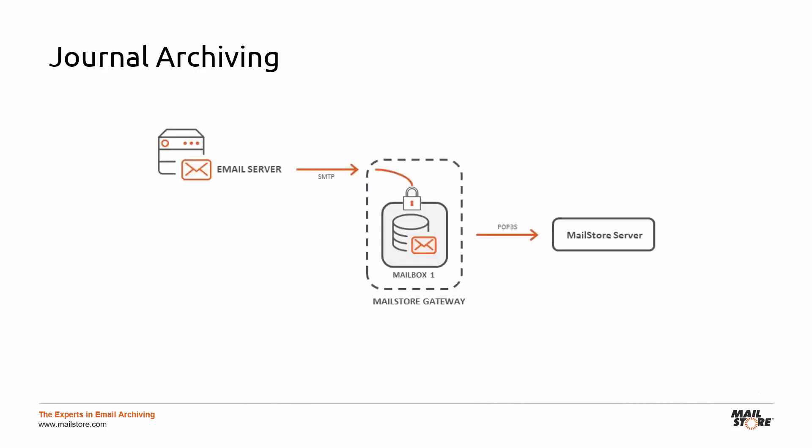Now that you've created a mailbox, let's return to using the gateway itself. Just to recap: the journal emails are going to be forwarded, so in Microsoft Office 365, the mailbox just created in the gateway is now defined as the target or destination for the emails being forwarded. For its part, MailStore Server will archive these emails.